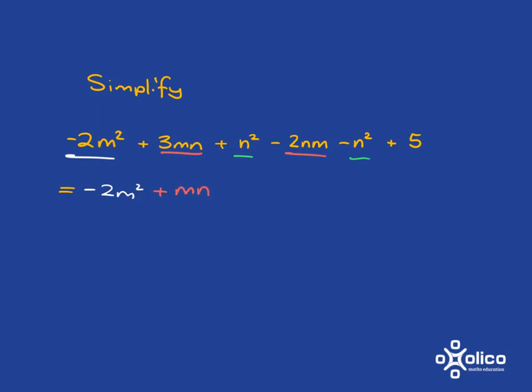Then we've got plus n squared subtract n squared. That's going to leave you with nothing. And then the last thing is the plus 5. It's got nothing to go with, so we end up with plus 5 on its own.